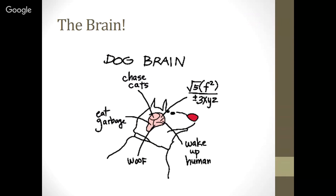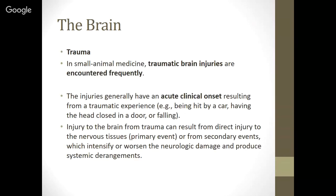With the brain, we can have trauma. Whenever we talk about diseases, we go through all the different possibilities: Is it immune-mediated? Infectious? Inflammatory? Idiopathic? Due to trauma, the endocrine system, or neoplasia? In this case, we're going to start with trauma of the brain. In small animal medicine, traumatic brain injuries are encountered pretty frequently. Most of these injuries generally have an acute clinical onset — meaning it just happened — resulting from a traumatic experience like being hit by a car, having the head closed in a door, or falling.